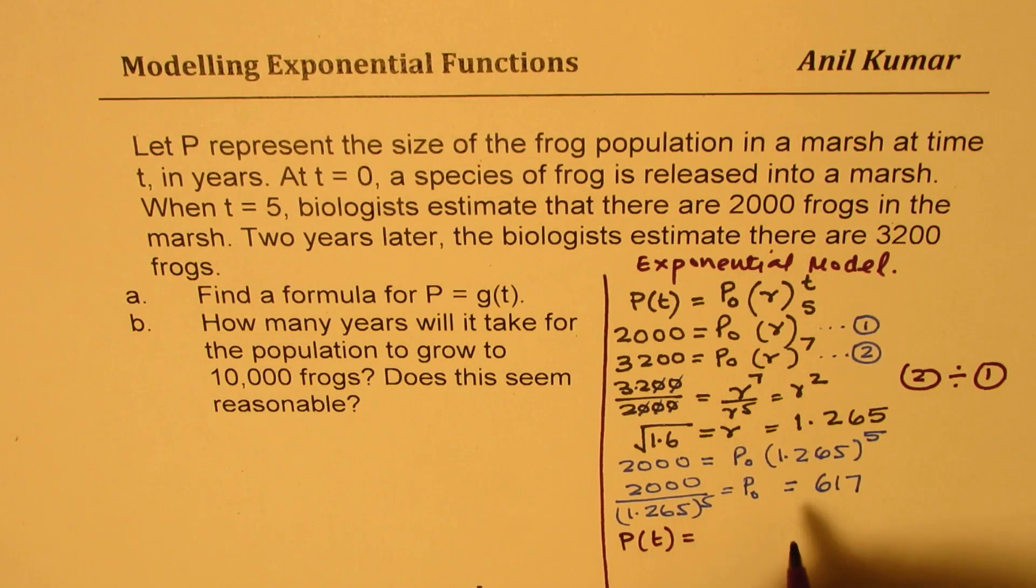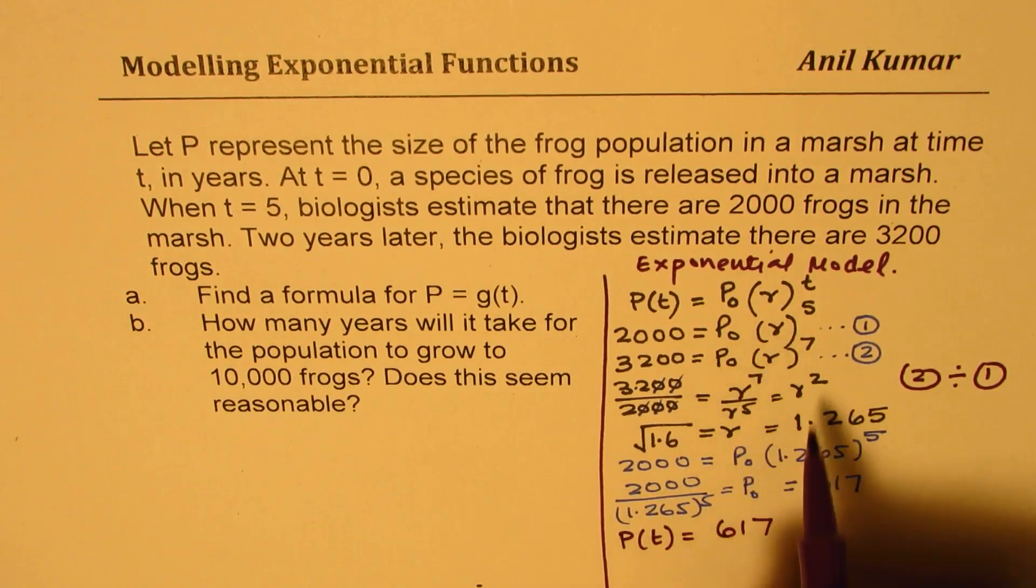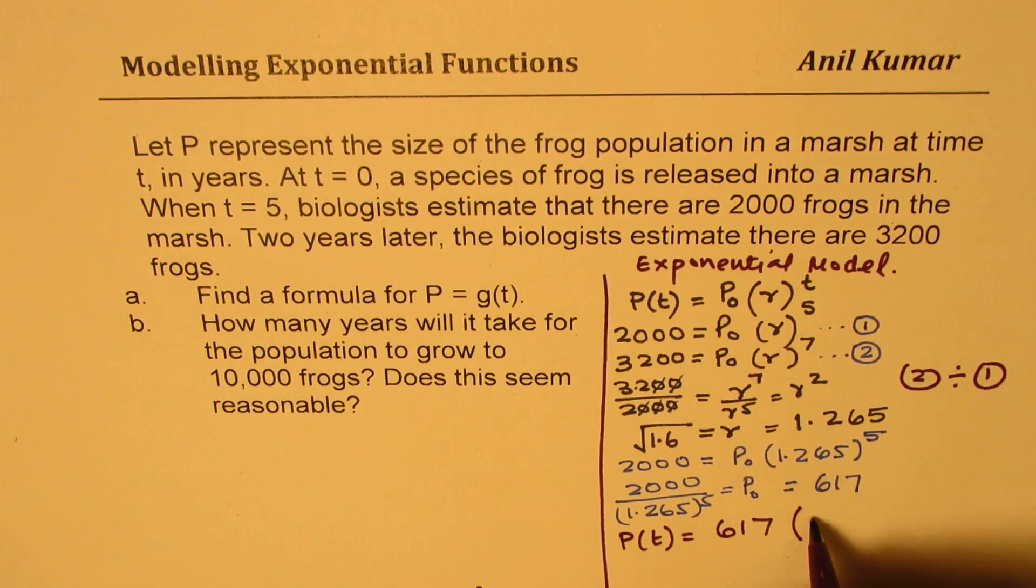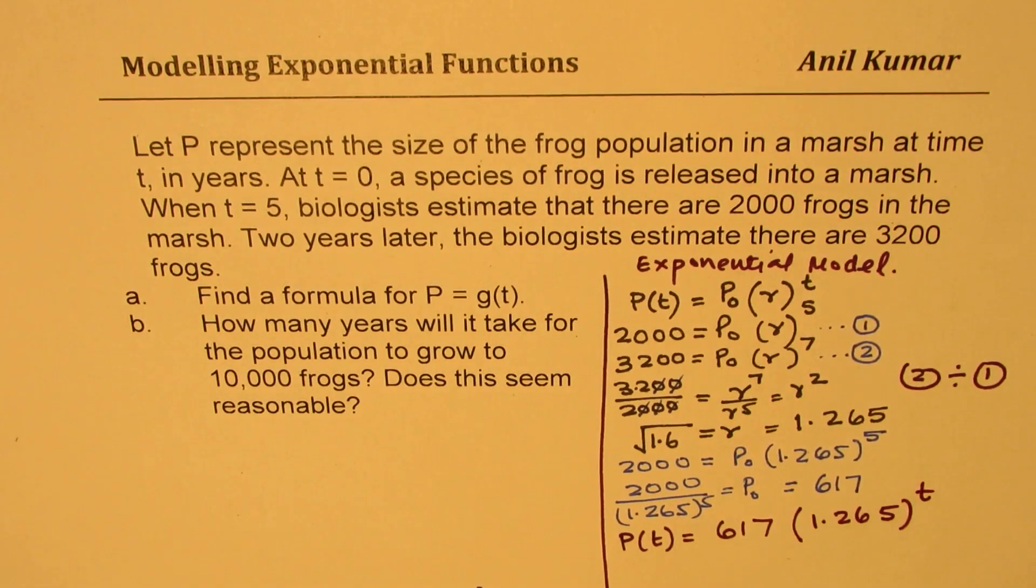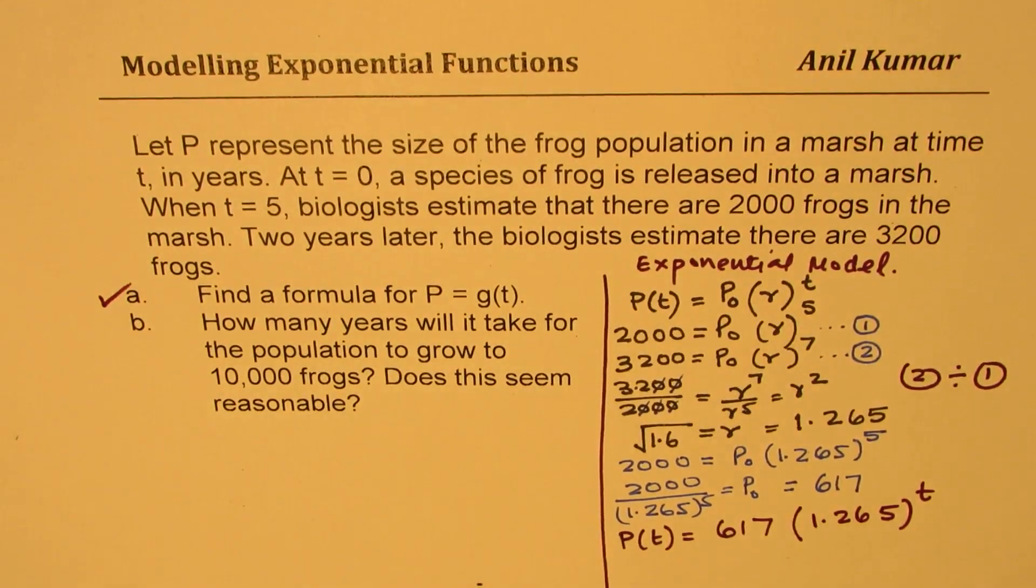It is equal to 617 times 1.265 to the power of t. So we've done part 1. Now, part b. How many years will it take for the population to grow to 10,000 frogs? Does this seem reasonable?